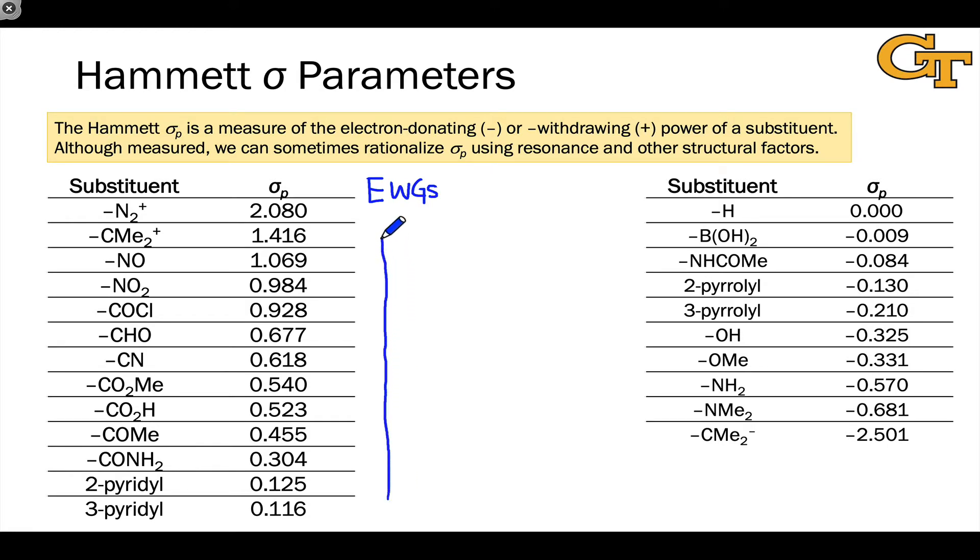The strongest electron withdrawing groups are at the top, diazonium and carbocations, and the weakest electron withdrawing groups, two pyridyl and three pyridyl, are down here at the bottom.